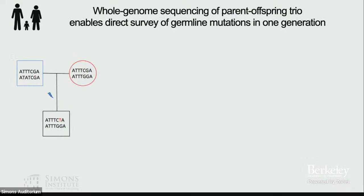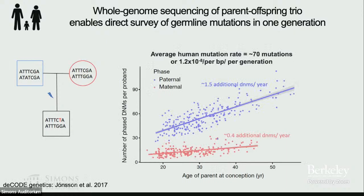We can directly sequence the genome of parents and offspring, and at each position ask whether the offspring's sequence differs from the parents', controlling for sequencing errors and coverage to confirm genuine germline mutations. On average, we find that an offspring has around 70 to 100 de novo mutations depending upon the age of the parents. For every year increase in the father's age, an offspring gets an additional 1.5 mutations, and for every year increase in the mother's age, the offspring gets 0.4 additional mutations.